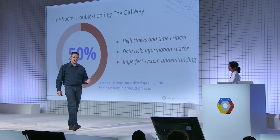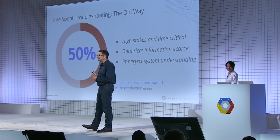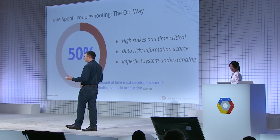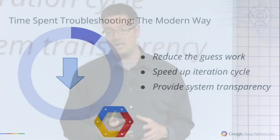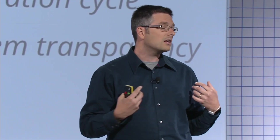If we're honest with ourselves, we have maybe an imperfect understanding of the applications we're maintaining in production. Maybe we didn't write all of the code that's there, maybe somebody else changed things, or maybe we're new to the project. Yet it's our job to maintain that in production. So we think in the modern cloud, we want to reduce this significantly. We want to take the guesswork out of production debugging, speed up that finding-fixing cycle, and provide deep system transparency so you know what your code and the system code are doing.